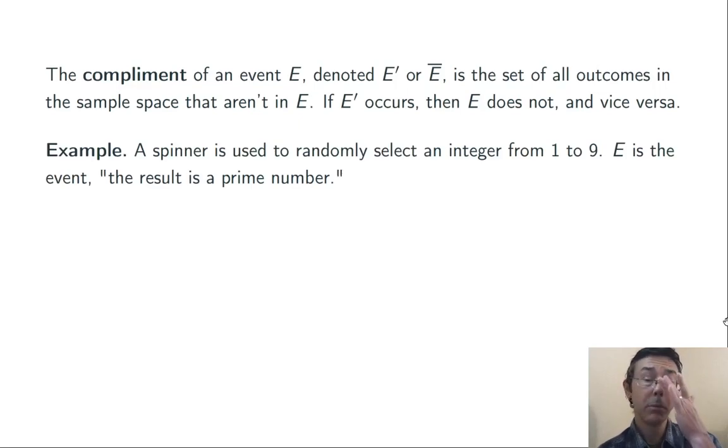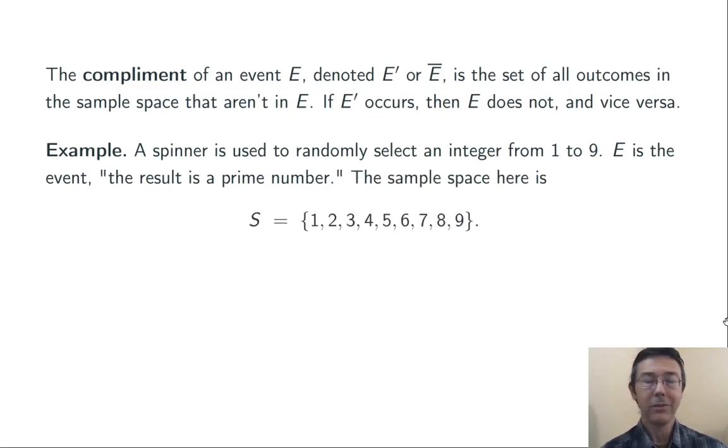For instance, suppose we use a spinner to randomly select an integer from 1 to 9, and let E be the event the result is a prime number. Here's the sample space. It's just the integers from 1 to 9. And here's the event E written as a set. It's all the prime numbers that are less than 10: 2, 3, 5, and 7.